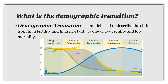Stage four of the demographic transition model is viewed as the ideal placement of a country because total population growth is very gradual. Examples of stage four countries are Argentina, Australia, Canada, Brazil, most of Europe, Singapore, South Korea, and the United States.